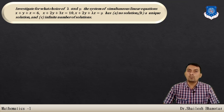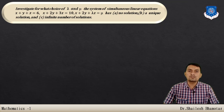Investigate: for what choice of lambda and mu does the system of simultaneous linear equations — x + y + z = 6, x + 2y + 3z = 10, x + 2y + λz = μ — have no solution, a unique solution, and infinitely many solutions?